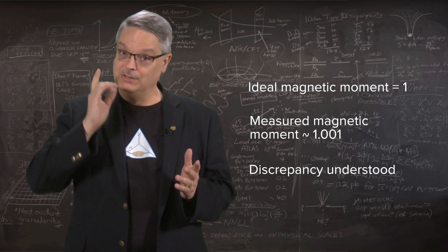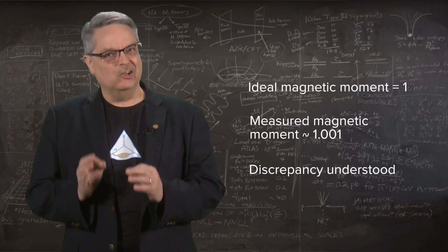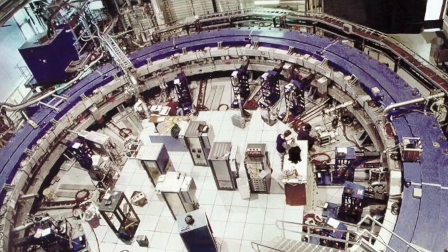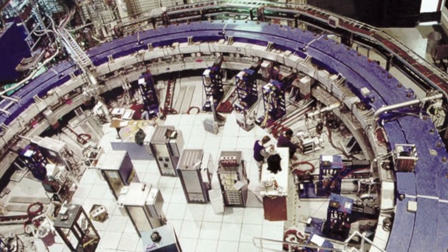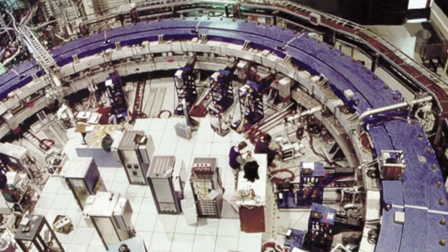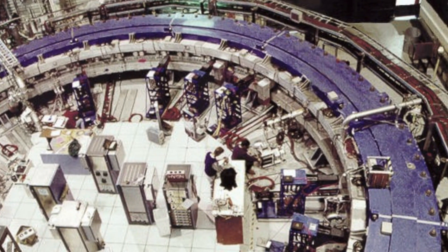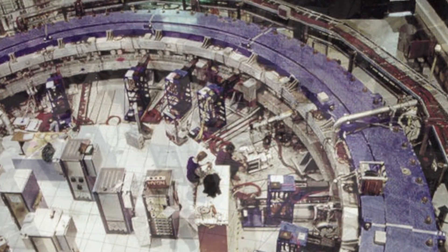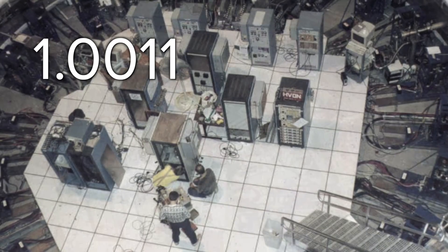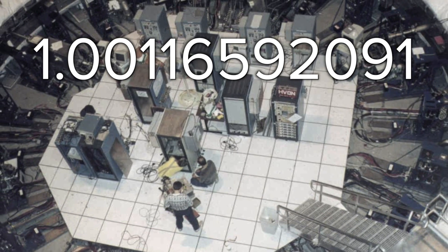The mystery arises when we measure the magnetic moment ultra-precisely. During the late 1990s, an experiment at Brookhaven National Laboratory called G-2 studied the magnetic moment of the muon and determined a value of 1.00116592091.